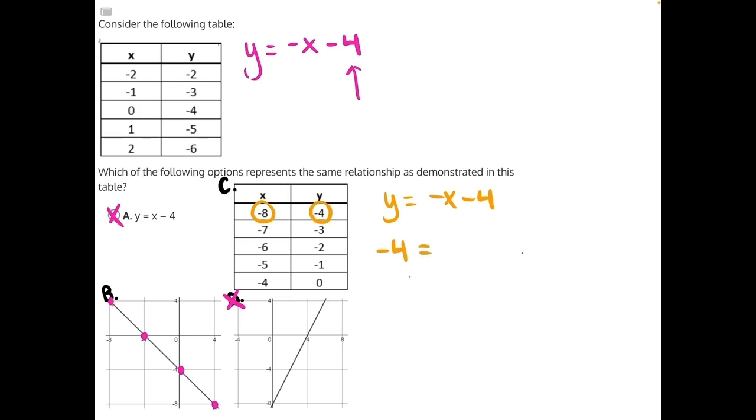We'll have negative 8 and negative 4. So y will be equal to negative 4. x will be equal to negative 8, and be very careful here, because this negative outside of the x will need to stay outside of our value of x.